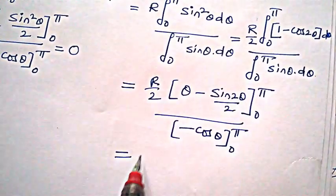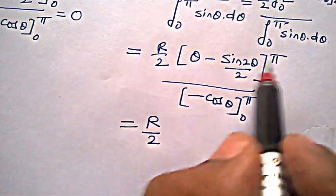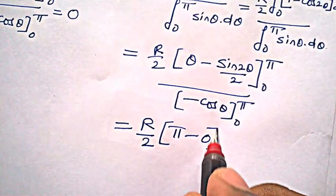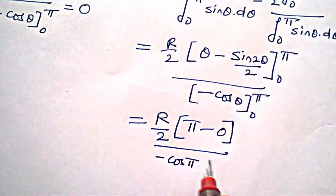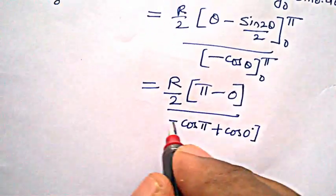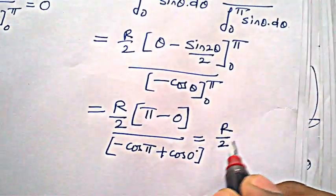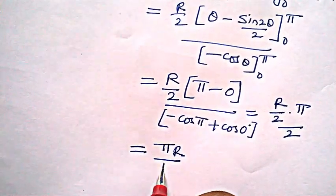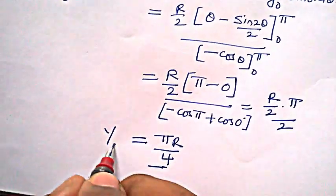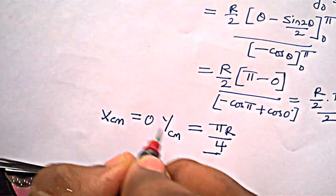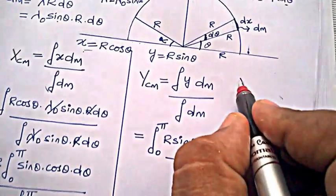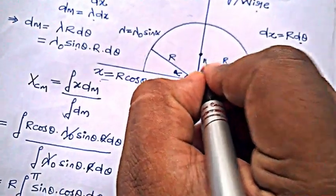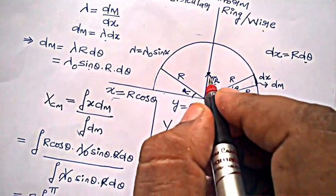Substituting the limits: numerator gives r/2 · [π − sin(2π)/2 − (0 − 0)] = r/2 · π. The denominator gives −cos(π) − (−cos 0) = 1 + 1 = 2. So y_cm = (r/2 · π) / 2 = πr/4. Therefore, x_cm = 0 and y_cm = πr/4, meaning the center of mass lies at coordinates (0, πr/4) — at a height of πr/4 from the center. Thanks for watching!